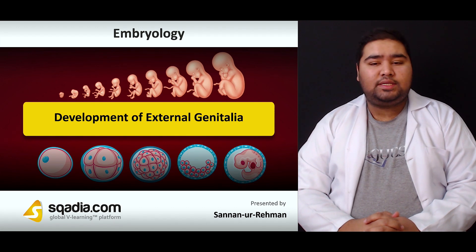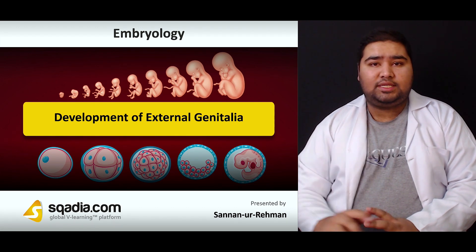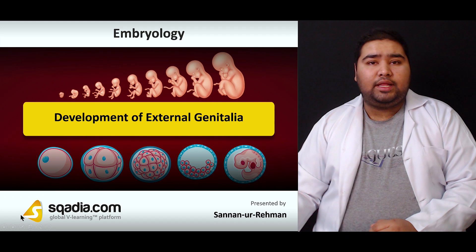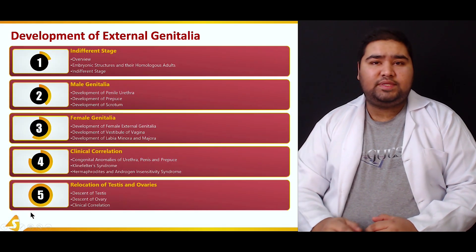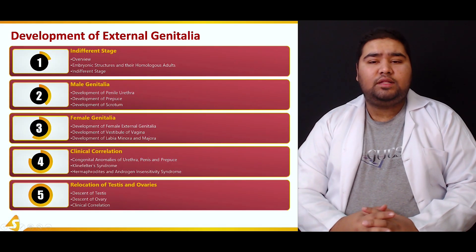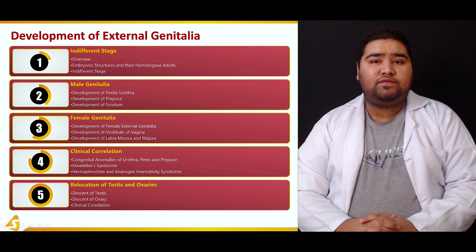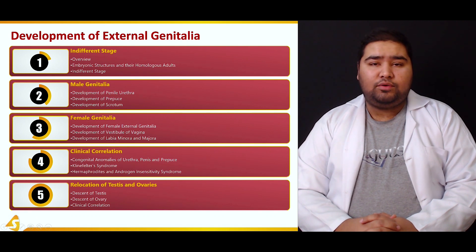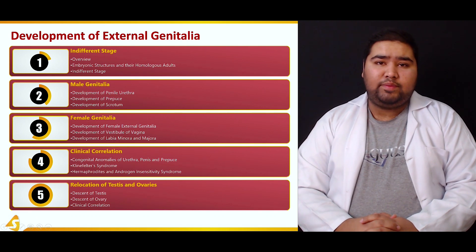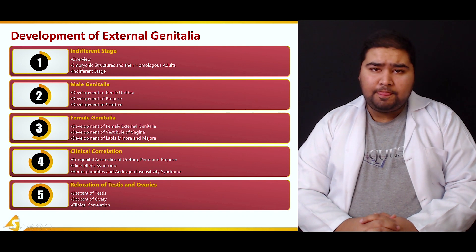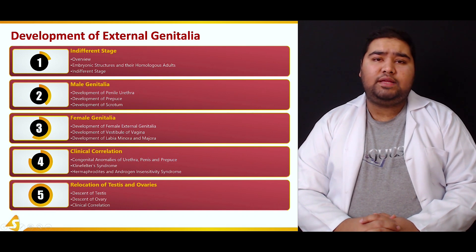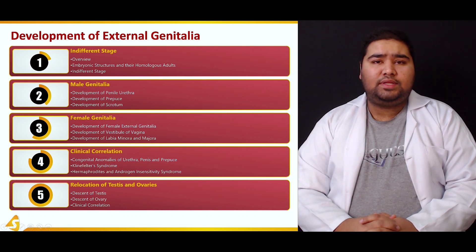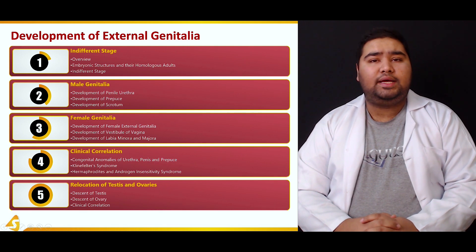This lecture is about the development of external genitalia. In this lecture, we have five subsections. The first section is about the indifferent stage of the gonad. In this stage, the gonad is neither male nor female. However, various influences act on this gonad so that it may develop into a specific set of adult structures.